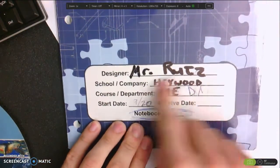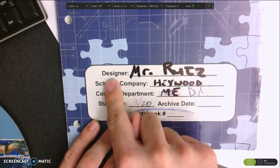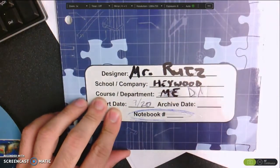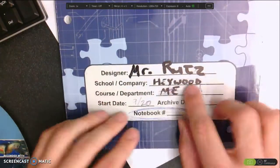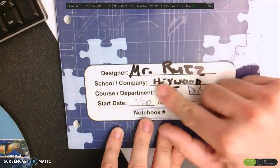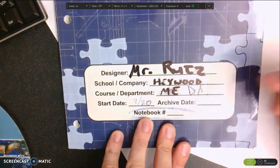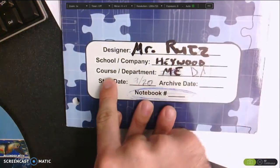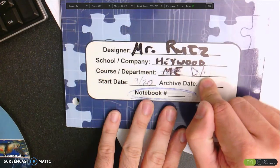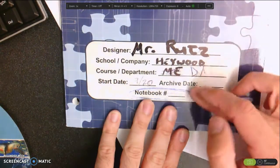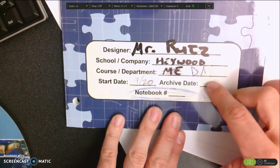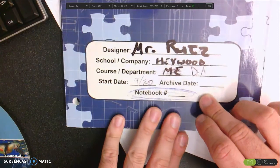The first thing you'll notice is the bottom section has all the information that you could possibly need to identify who owns the notebook and where it comes from. You'll see designer—that's me, Mr. Russ—school or company, Haywood is my school and where I work. Course department, we do magic of electrons or design and modeling. I have to apologize because the marker I used was not very good and then I went through a series of pens that weren't good as well, so it really did not come out well.